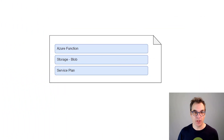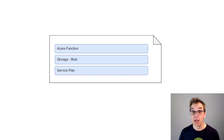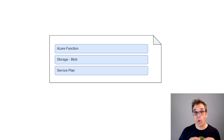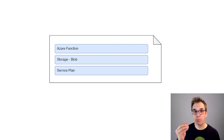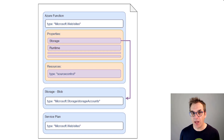Let's have a look at a simple Azure Function ARM template. To be able to deploy an Azure Function using an ARM template, you need at least three resources: the Azure Function, the blob storage, and a service plan. The function is the function, the blob storage is where, when creating and instantiating the function, we will put the code and everything, and the service plan is to define the resources and how we will be able to scale our function.